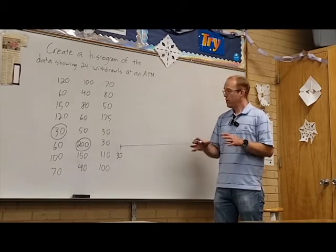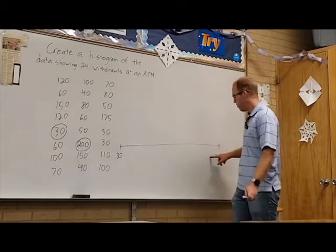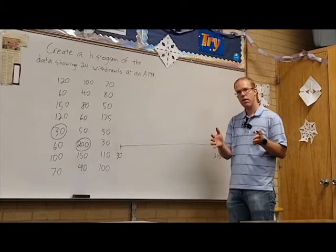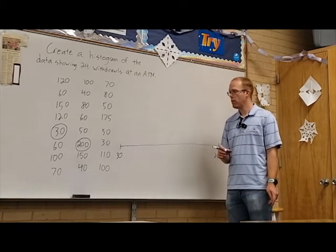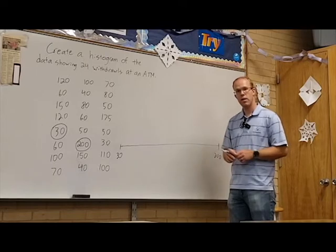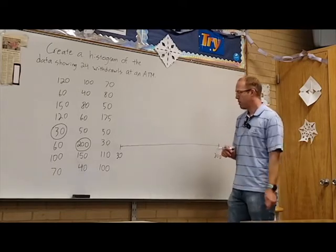A rule of thumb that I like to kind of start with is to try and break this down into somewhere between 5 and 10 intervals. I find that's a good rough place to start, and I can adjust from there if I find I have too much data or too little data in a particular spot.